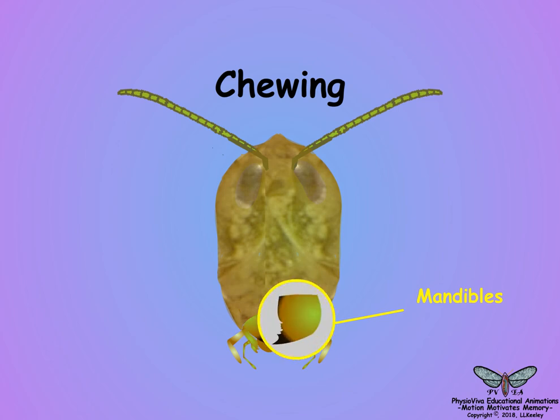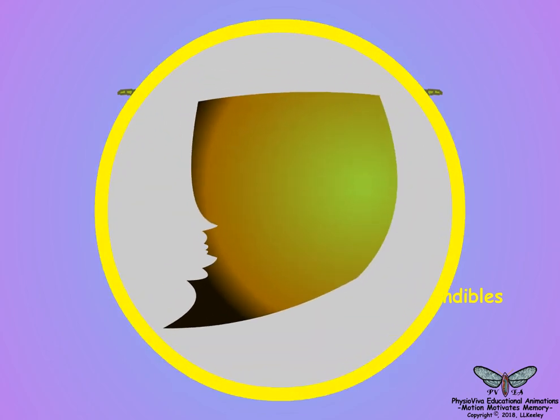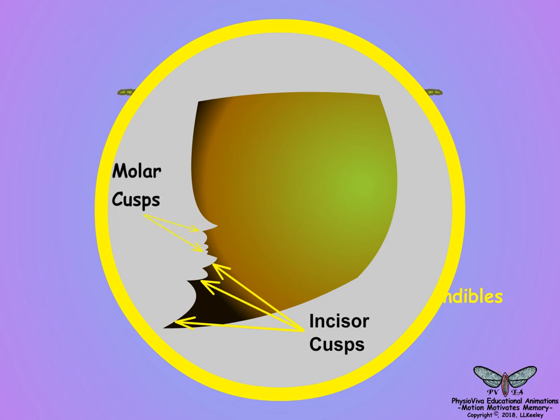The mandibles have a distal incisor cusp for cutting the food, and a proximal molar cusp for crushing the food by chewing.